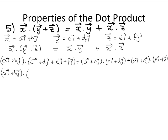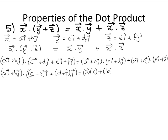To add these vectors you have to add the i components and the j components, so (c plus e)i plus (d plus f)j. Then from the definition of the dot product, you find the product of the i coefficients plus the product of the j coefficients and add them together. So that gives a times (c plus e) plus b times (d plus f) on the left, and on the right: a times c plus b times d, and a times e plus b times f.